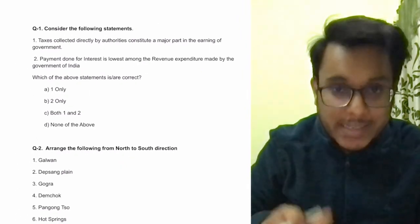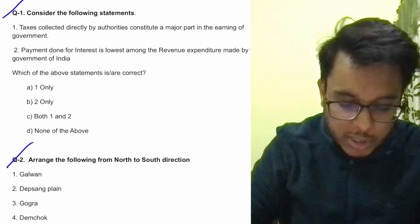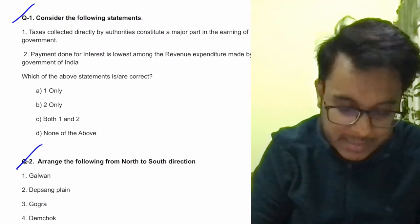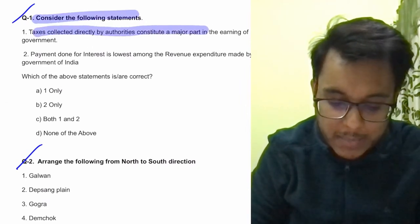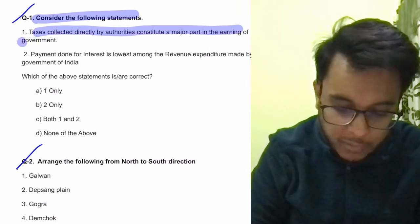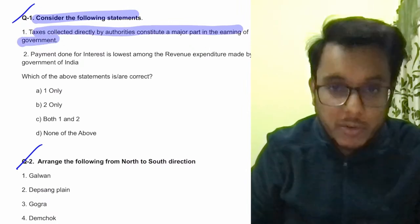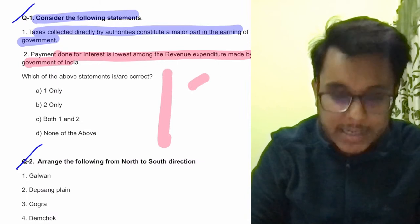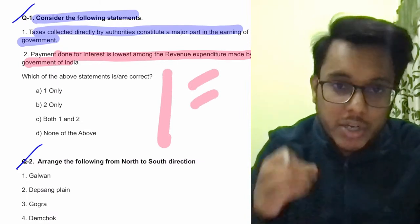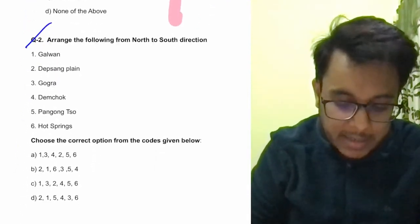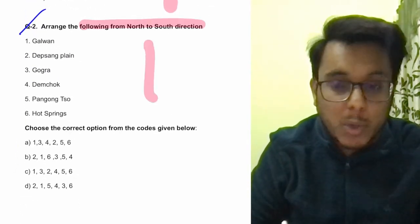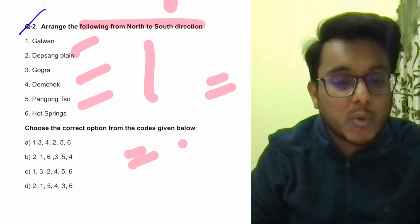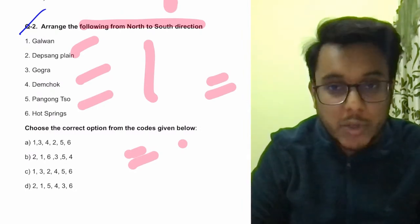Now the questions for today — we'll take two questions. Question 1 is about taxation since the budget was recently announced: Are taxes collected directly by authorities the major part of government earnings? And is the payment done for interest the lowest among revenue expenditure made by the government of India? Question 2 asks you to arrange items from north to south based on yesterday's article. Pause the video and post your answers in the comments.